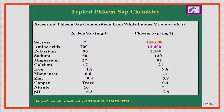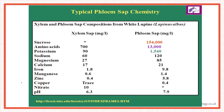Now, what does the phloem sap contain, or what is actually being translocated across the plant? There is a list of organic compounds as well as inorganic minerals. But what you need to remember is sucrose and amino acids — these are the two to focus on. These organic compounds are also called assimilates. This is a comparison between xylem sap and phloem sap.